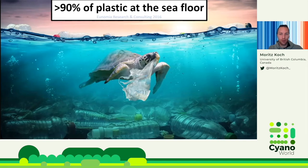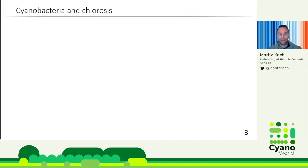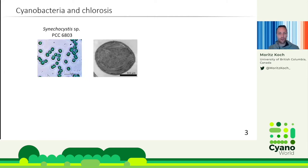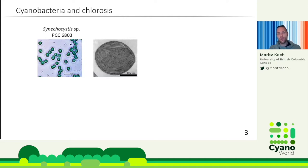We have to do something about this, and this is where some bacteria come into play — maybe they can actually provide a technological solution. The strain I'm working with is probably very familiar to many of you: it's the best characterized cyanobacterium there is, Synechocystis 6803. You can see quite nicely that the cells have thin filaments where photosynthesis takes place.